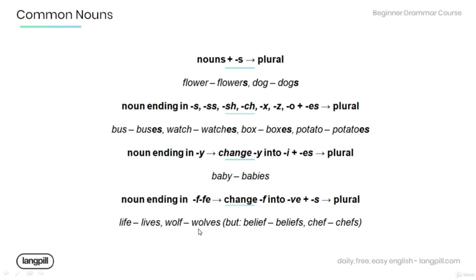However, there are exceptions to the 'f/fe' rule. For example: belief → beliefs, chef → chefs — these just add 's' rather than changing to 'ves'.